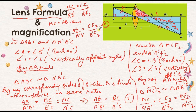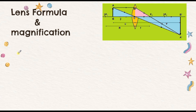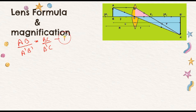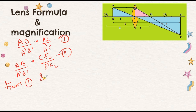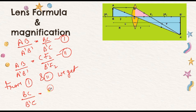From equations 1 and 2, we get BC/B'C = CF2/B'F2. Now we apply sign conventions — we measure all distances from the center C. B'F2 is not directly measured from C, but we can write B'F2 = B'C − CF2. So the equation becomes BC/B'C = CF2 / (B'C − CF2).